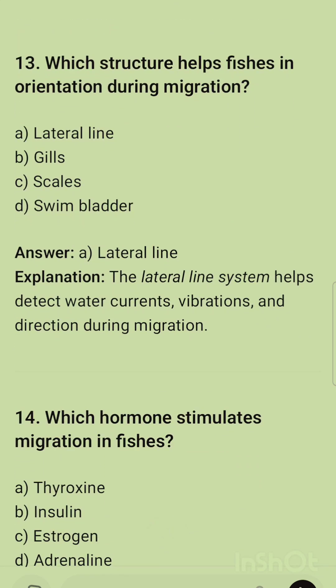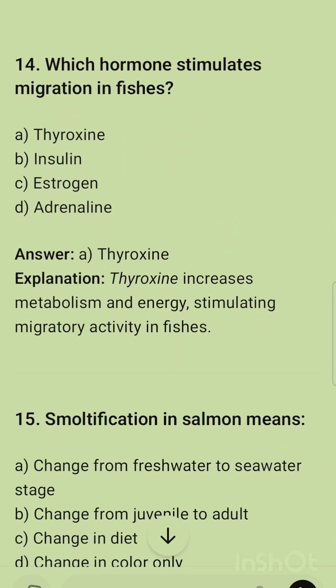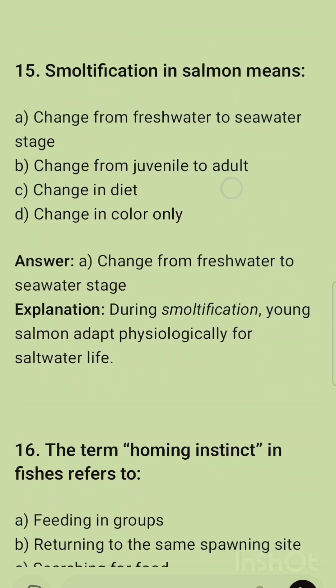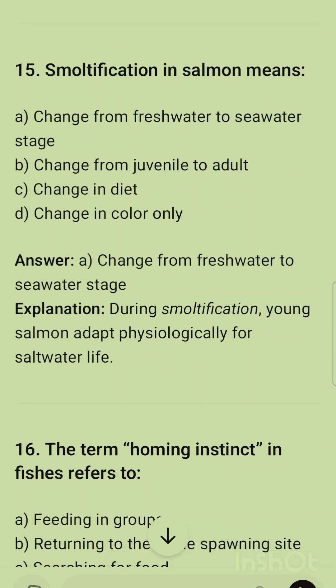Question 13: Which structure helps fishes in orientation during migration? It is the lateral line. The lateral line system helps detect water currents, vibrations, and direction during migration. Question 14: Which hormone stimulates migration in fishes? The options are thyroxine, insulin, estrogen, and adrenaline — the correct option is thyroxine.